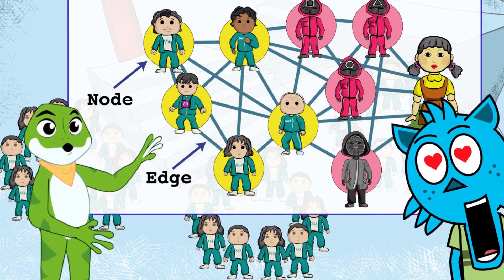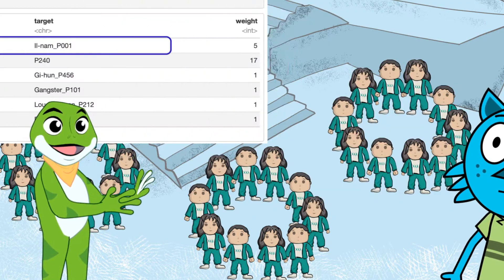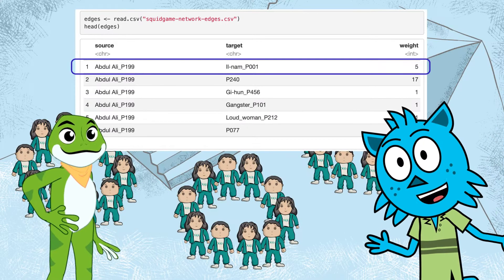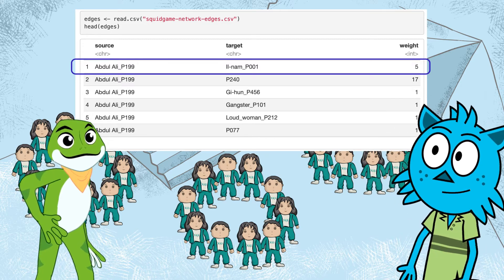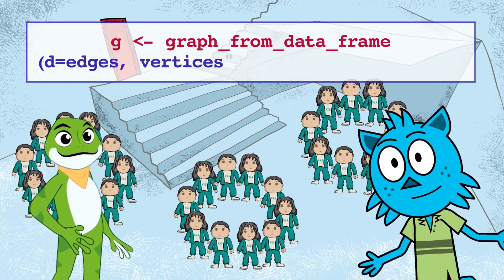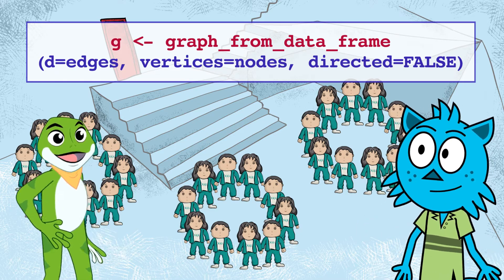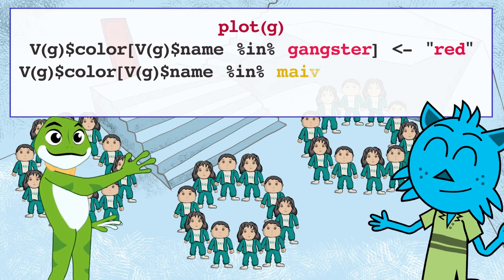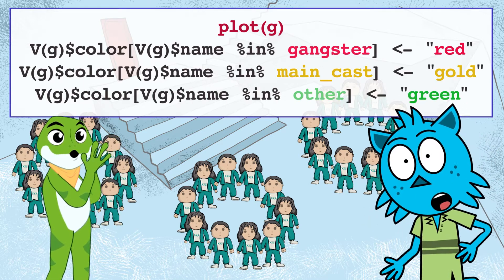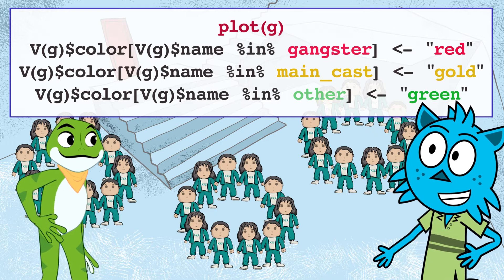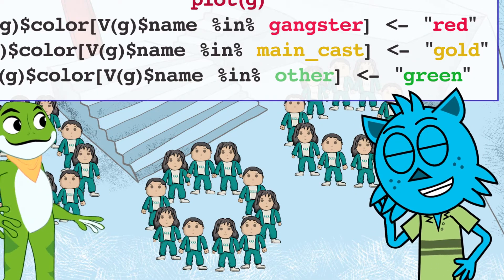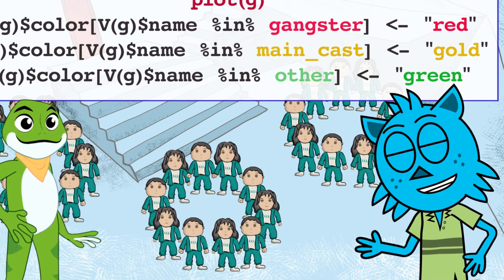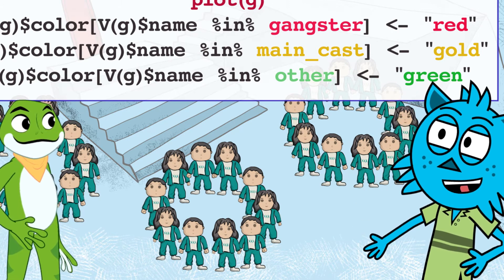That's right Teddy Bear. In this example, we can see that Ali and the old man appeared in five scenes together. Now let's create the iGraph object. We can use the graph_from_dataframe function, which takes the edges and nodes. We can visualize the network using the plot function, and create a new color variable to show nodes in three colors.